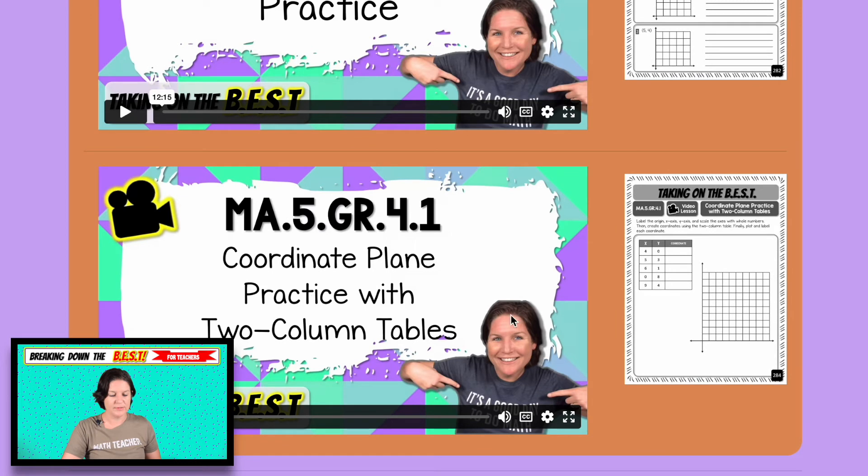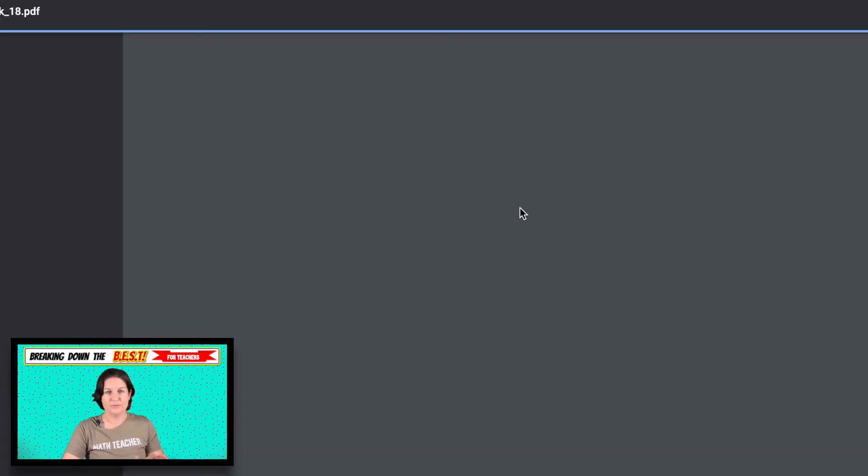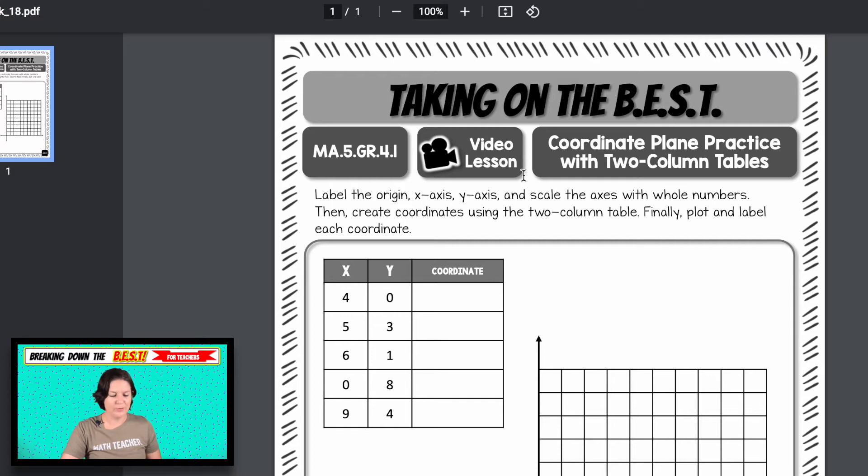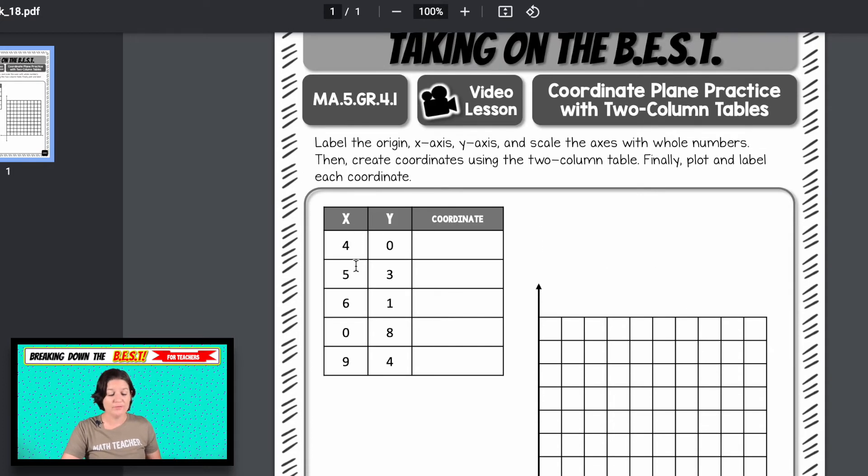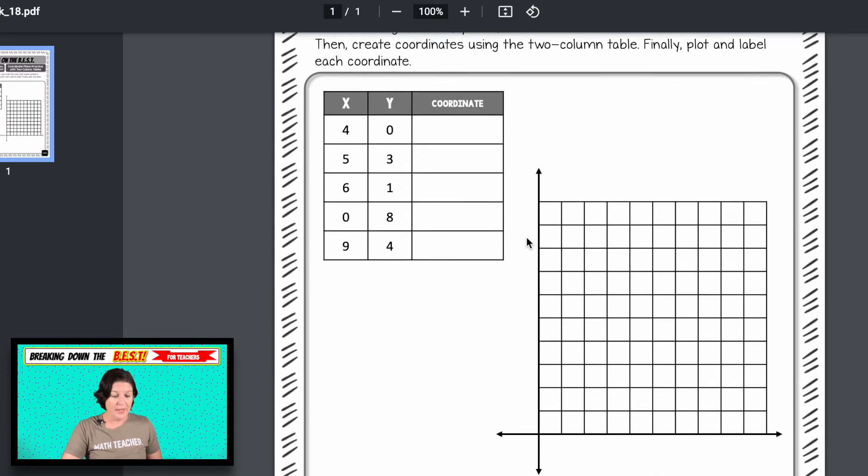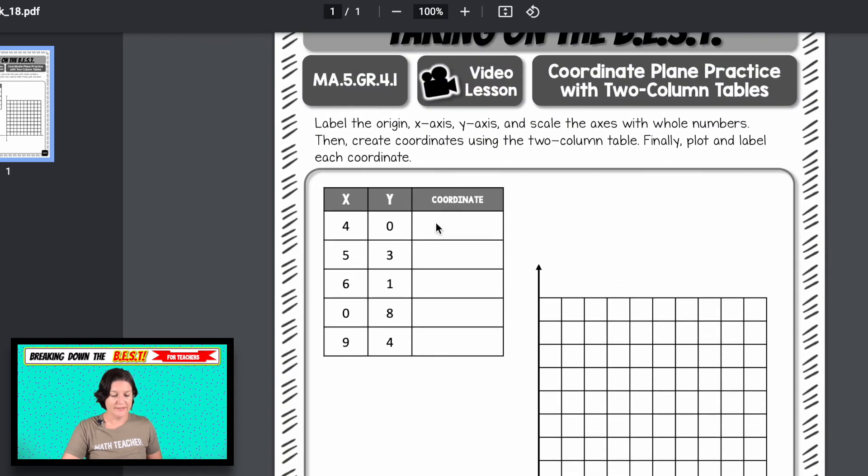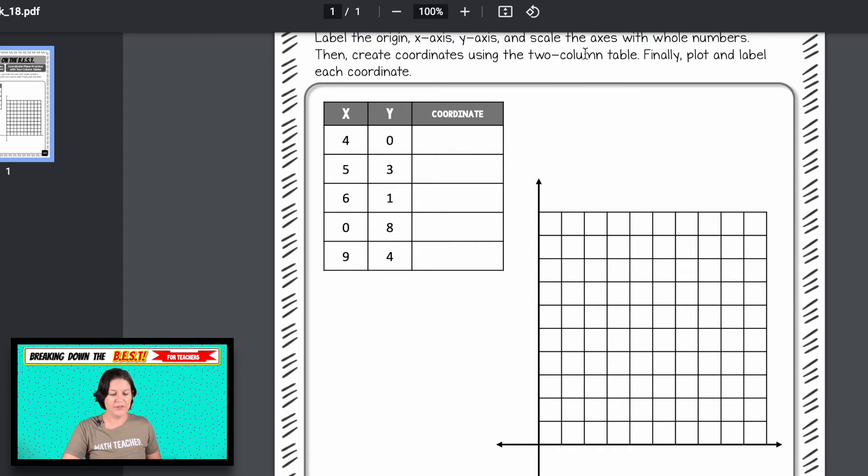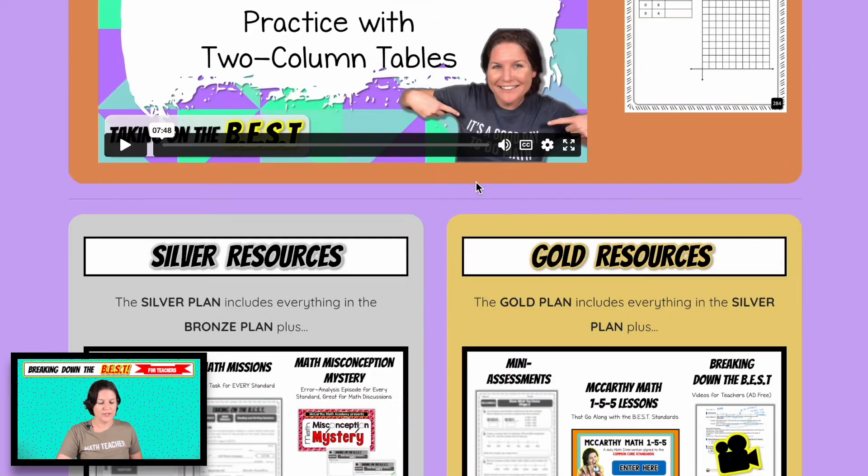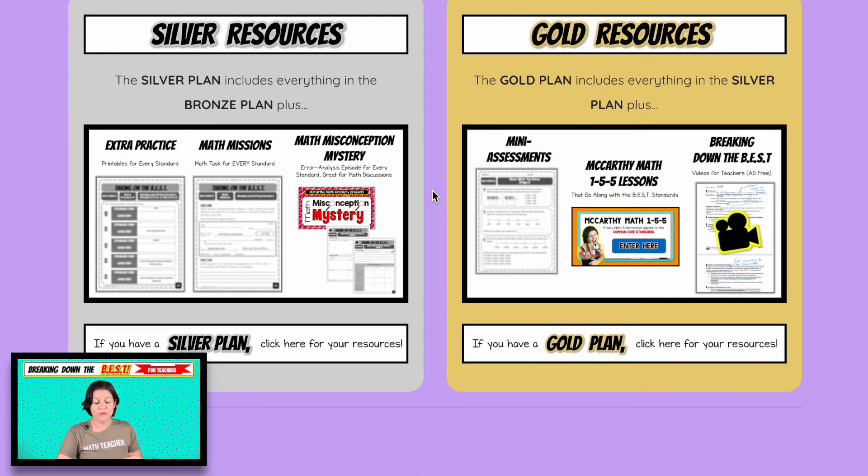And then the last one, it's practicing with a two column table. And I'll show you what I mean by this. I mentioned before, it's like, sometimes it's not a two column table. As you can see right here, we have the column for X and the column for Y. That to me is two columns, but we do have a third column right here that describes the coordinate and the standard that does say it mentioned a two column chart. So I don't know. But there's a lesson on that, how to take it from the X and the Y, create your coordinate and then plot it on the graph.